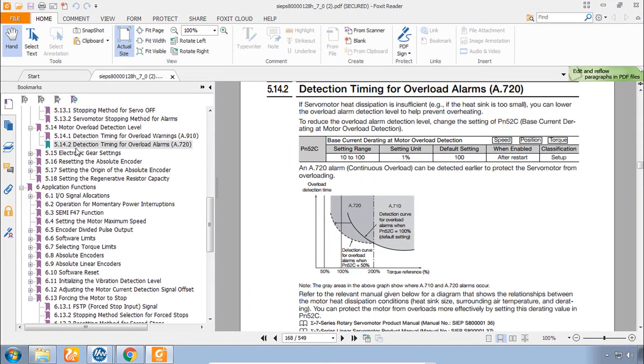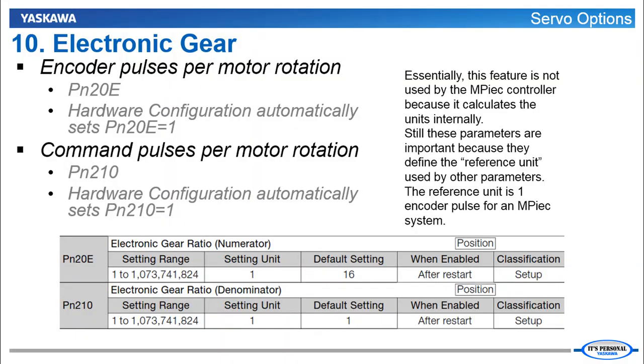Ok now the next topic in the manual is the electronic gear setting. I don't want to skip over this. However these parameters are controlled by the MPIEC controller. And they will always automatically be set both to one. Both parameters are a ratio. They're both set one to one. So this default of 16 does not apply to the MPIEC system. The MPIEC system commands the servo in units of encoder pulses. But these parameters exist for other controllers which may not have that capability. And instead they would be programmed in what's called the reference unit. So as it says here essentially this feature is not used by the MPIEC controller. Because that controller calculates the units internally. Still these parameters are important because they define this term reference unit used by other parameters and monitors that you'll see within the system. The reference unit is always one encoder pulse when you have an MPIEC system.